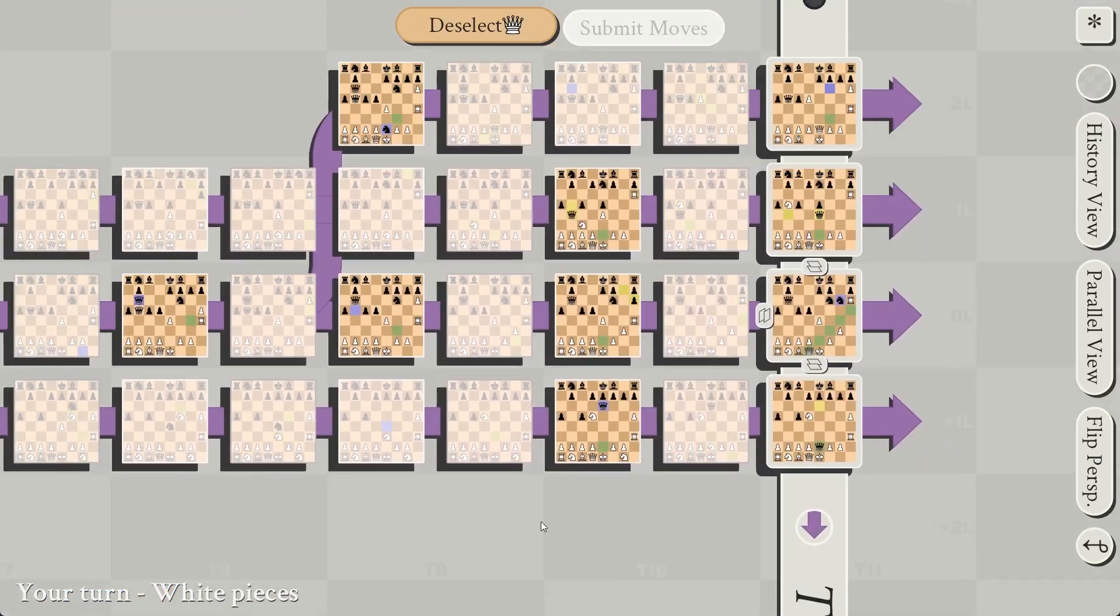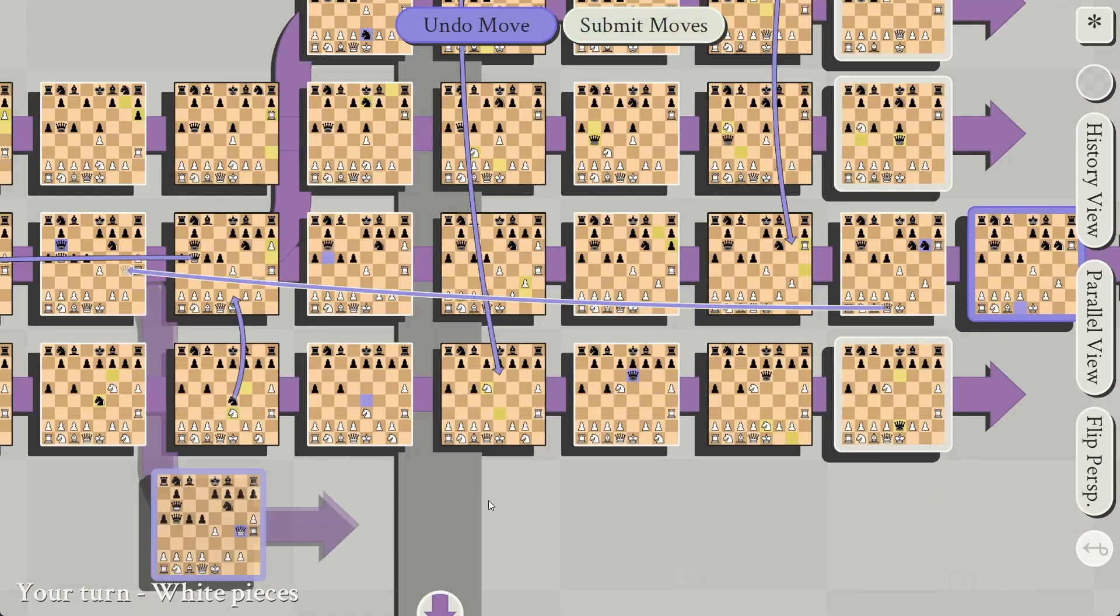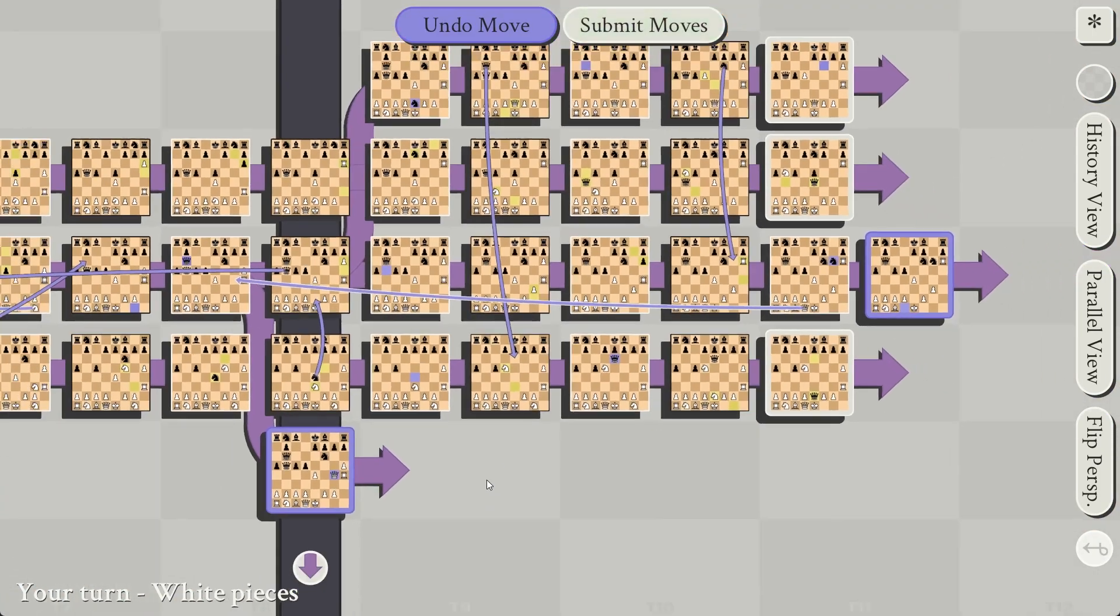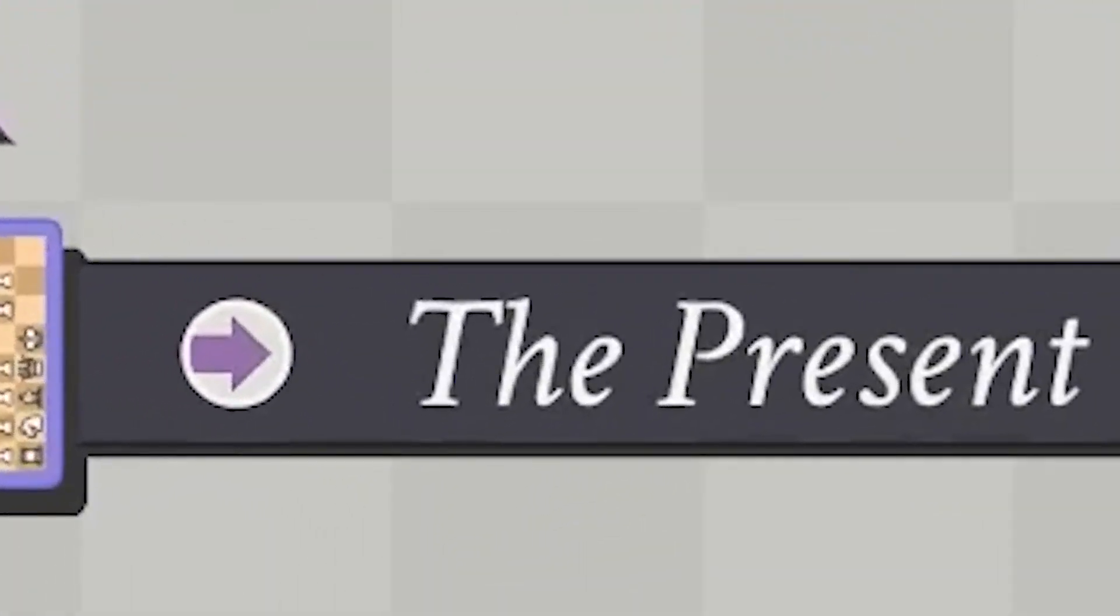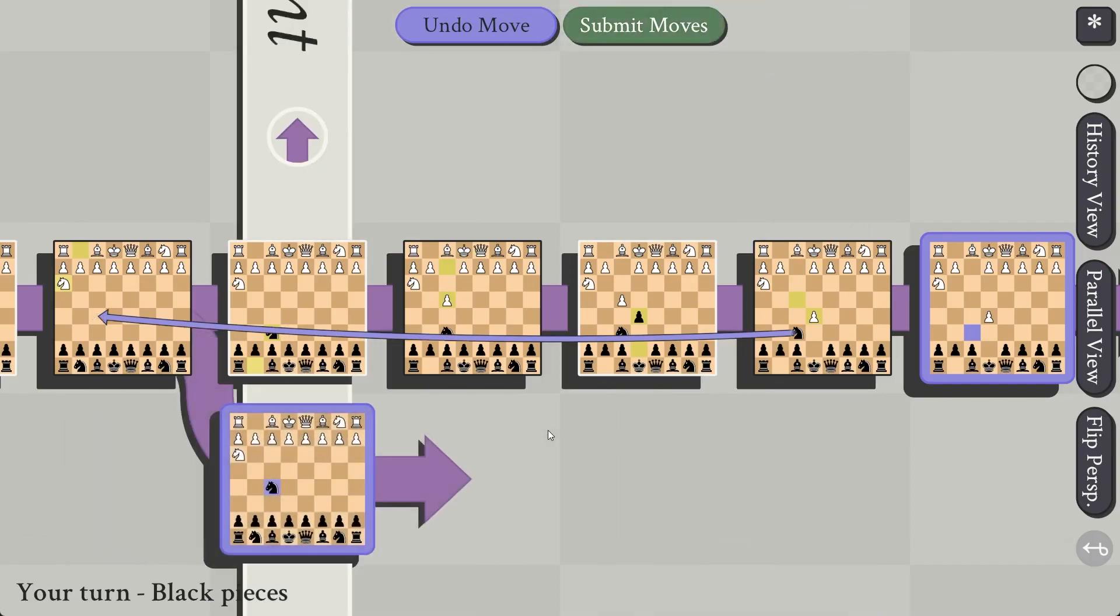Anyways, when you time travel to a board where the future has already happened, it creates a new timeline branching off of that board. This timeline adds another row to the multiverse and moves back the present marker, since the present is always at the earliest active board.